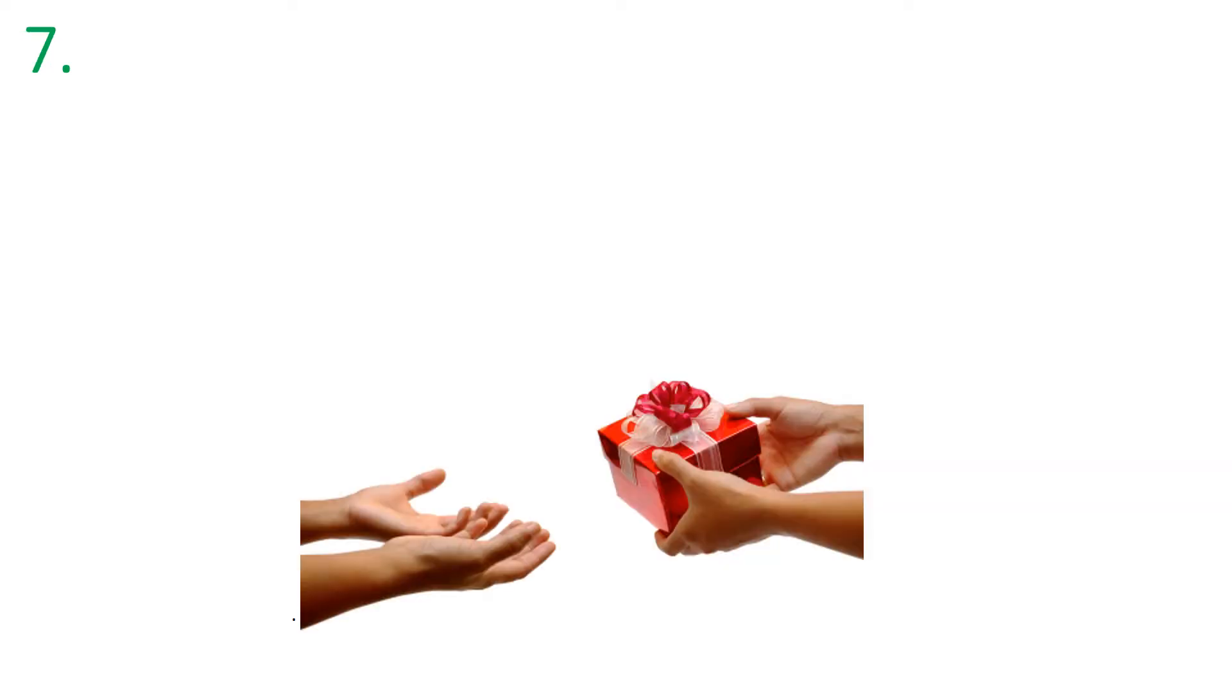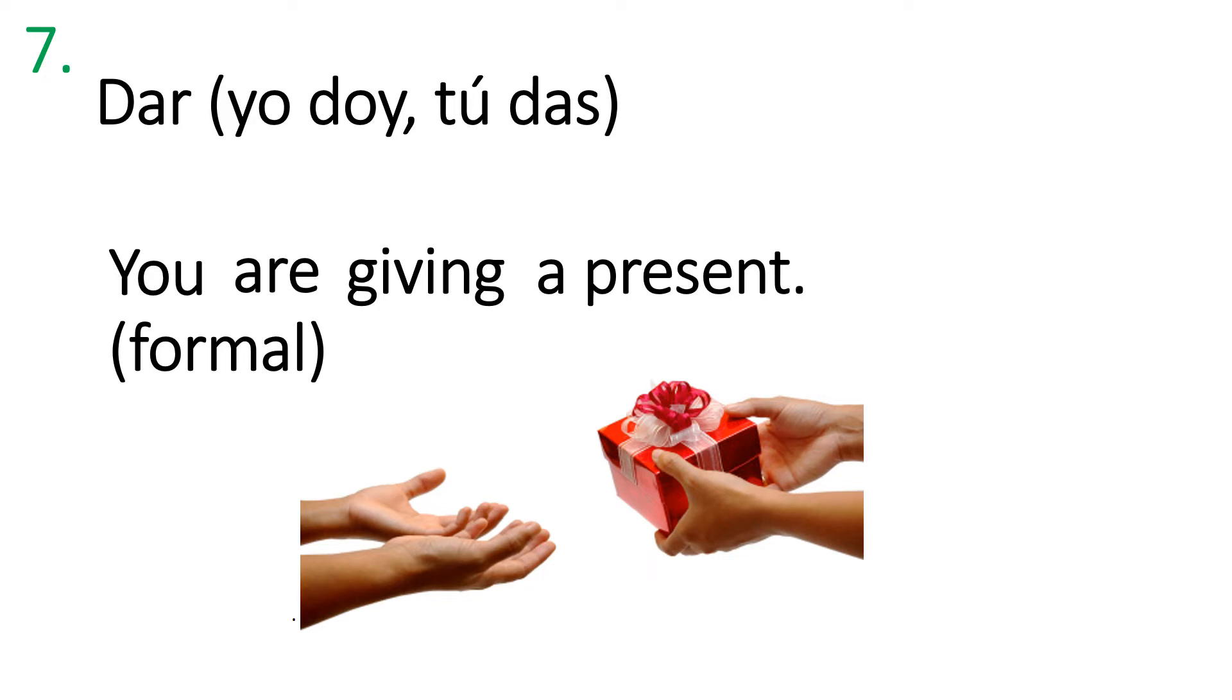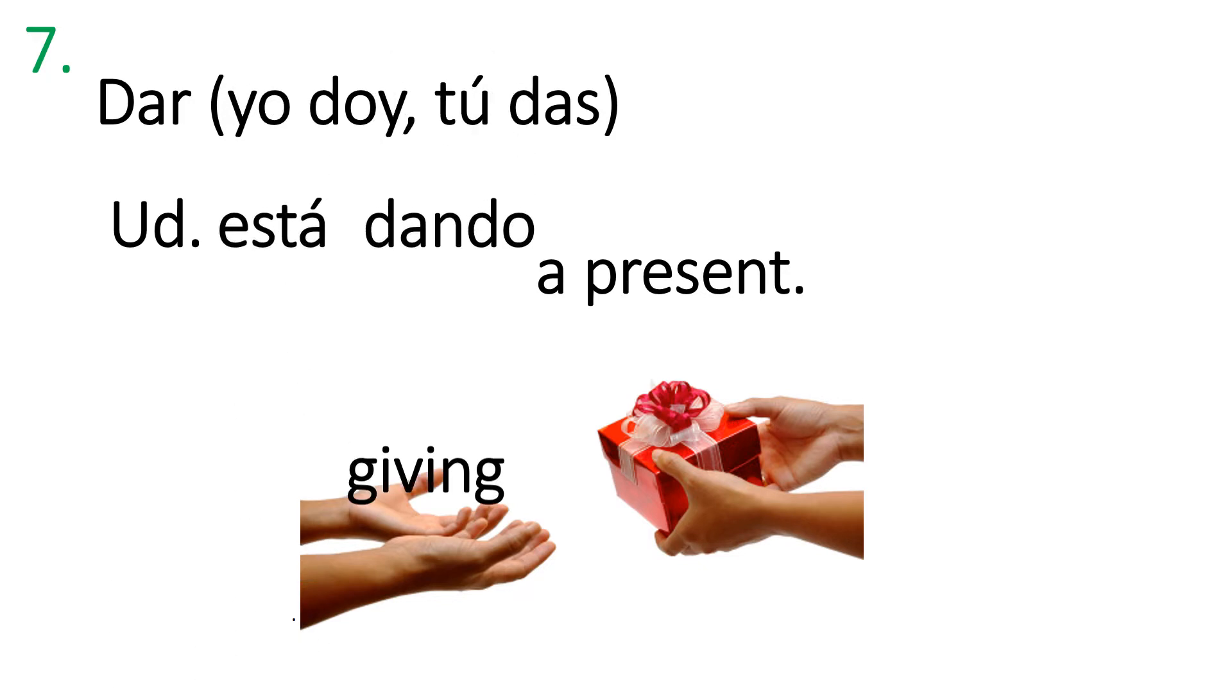Okay. Número siete. Cómo se dice to give? It's a short verb. That's right. Dar. It's a regular AR verb except for the yo form which is yo doy. How would you say this sentence? You are giving a present. Let's do formal you. Not tú. Let's check it. Usted está dando. And how would you say present? It starts with an R, regalo. That's it. Un regalo. Usted está dando un regalo.